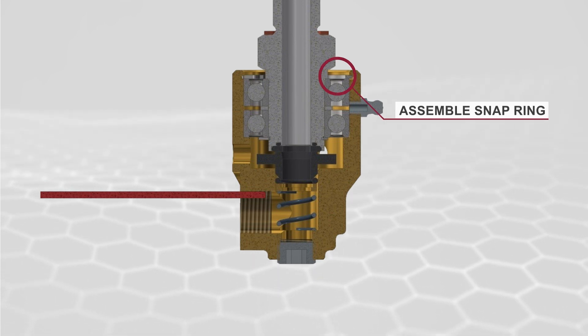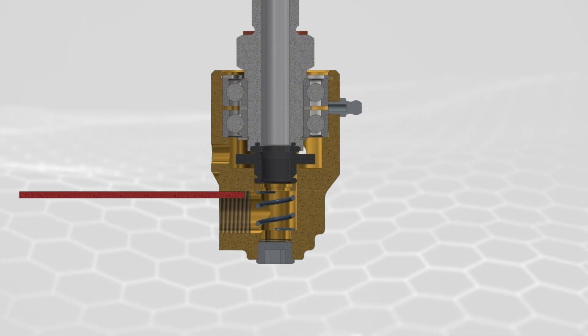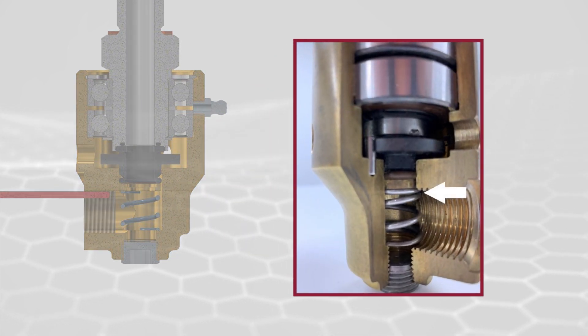Assemble the snap ring into the union housing and remove the spring retaining pin. Make sure that the spring is not caught on an edge once spring retaining pin is removed.